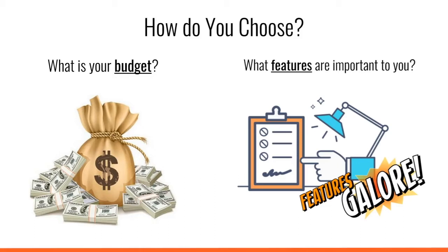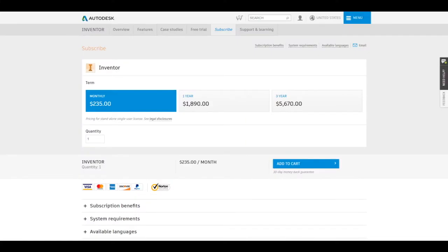Inventor and SolidWorks have slightly different payment plans. Inventor is a subscription-based program that you can use for a fixed term and then renew your subscription at the end. Inventor offers monthly payments of $235, yearly payments of roughly $1,900, and payments of $5,670 every three years.